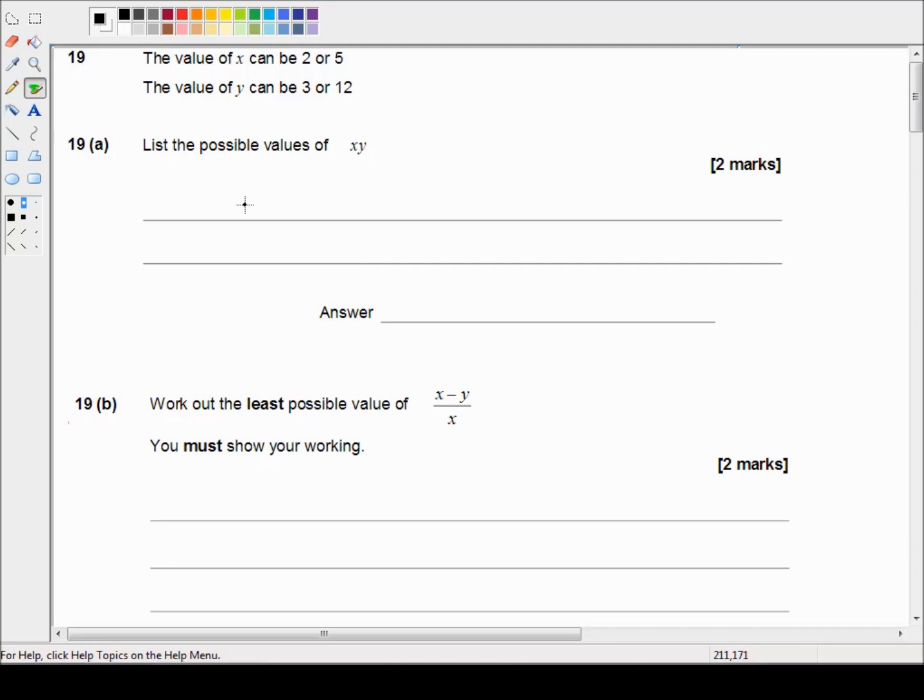It is a calculator paper and we're picking up in question 19 which says the value of x can be 2 or 5. The value of y can be 3 or 12. List the possible values of x times y.